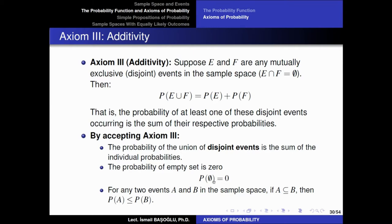When you perform an experiment, one outcome should be observed, so the empty set is impossible. Another result we can prove by combining all three axioms — non-negativity, unitarity, and additivity — is that if we have two events A and B in the same sample space such that A is a subset of B, and B is a subset of the sample space, then the probability of A can never be greater than the probability of B. If an event is a subset of another event, the subset event can never have a greater probability than the superset event.